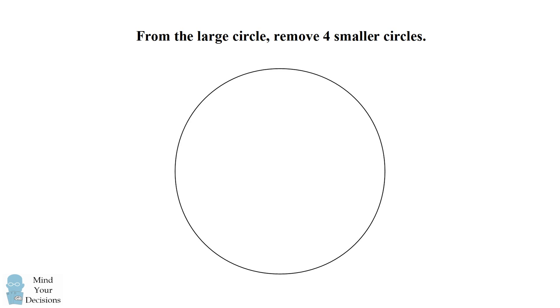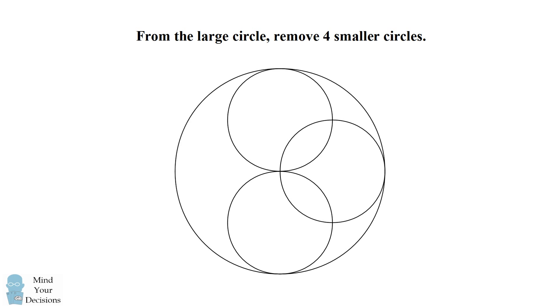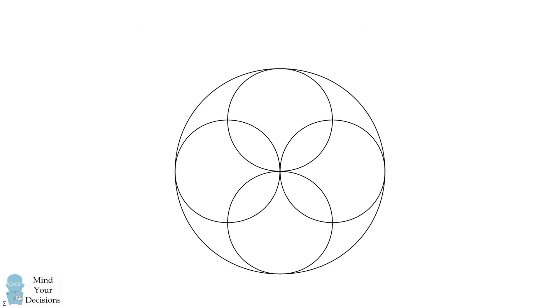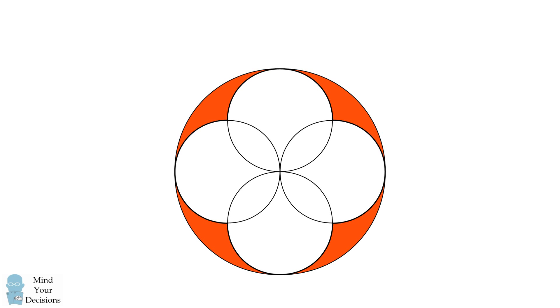Consider a large circle from which four smaller circles have been removed. Each of the smaller circles passes through the center of the large circle and touches the boundary of the large circle. The smaller circles are in the north, east, south, and west positions. If these four smaller circles are removed from the large circle, what is the area that remains?